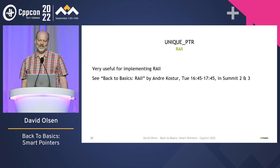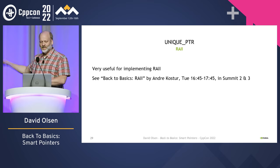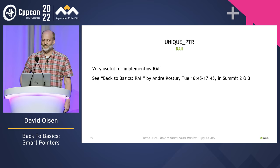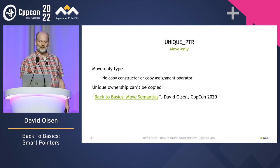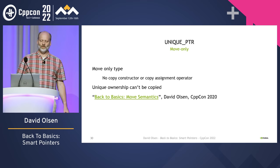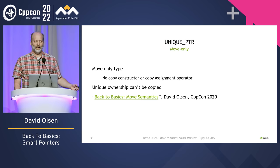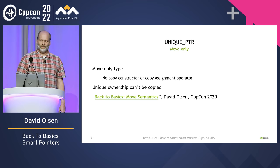unique_ptr is very useful for implementing RAII, or Resource Acquisition Is Initialization — for more on RAII, see Andre Coster's talk two sessions after this one. unique_ptr is a move-only type; it cannot be copied because it has no copy constructor or copy assignment operator, only a move constructor and a move assignment operator. That's because unique ownership can't be copied, only moved or transferred. If you want to learn more, you can watch any of the back-to-basics move semantics talks from the last four years.